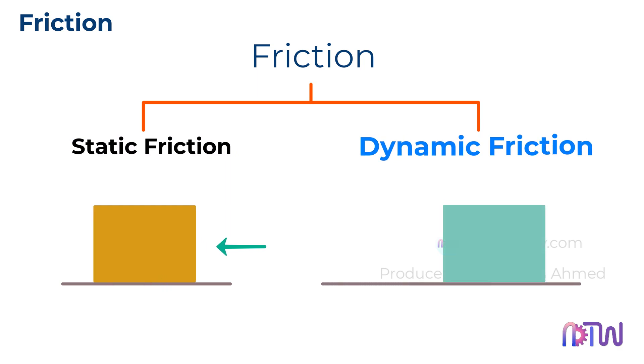Dynamic friction, which is also sometimes called kinetic friction. Once the box is in motion, kinetic friction acts against the direction of movement, but it is usually less than static friction.